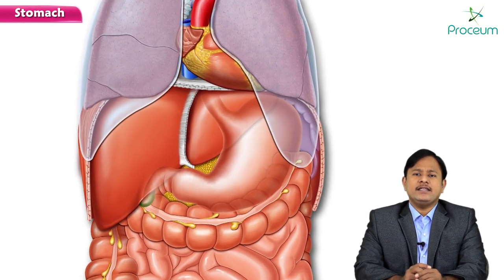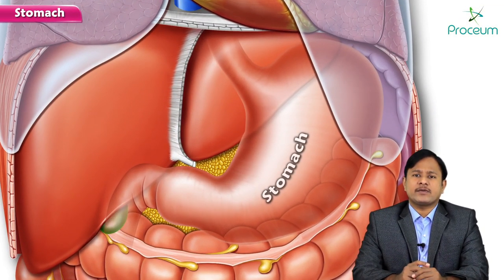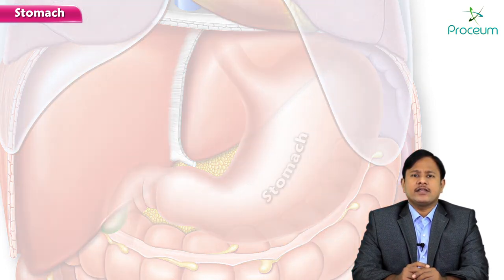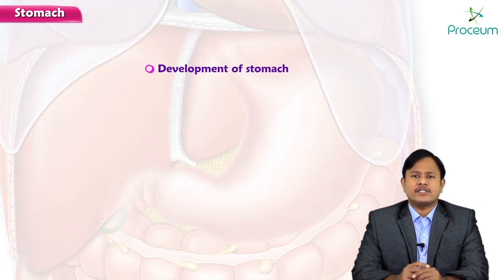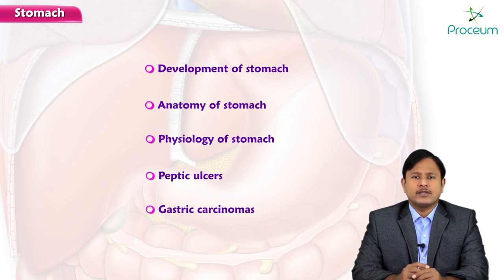Today we will be covering the topic of the stomach. As usual, we will start with the development of the stomach, then the anatomy and physiology, which is of prime importance, and then move on to the most important diseases — peptic ulcer and gastric carcinomas.